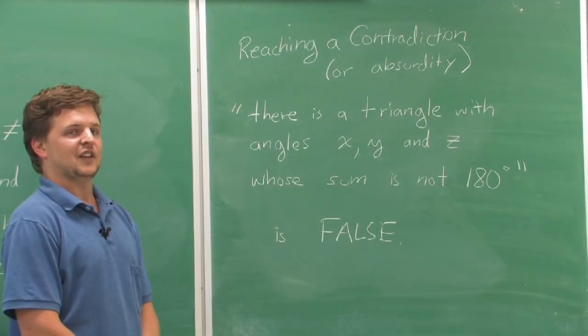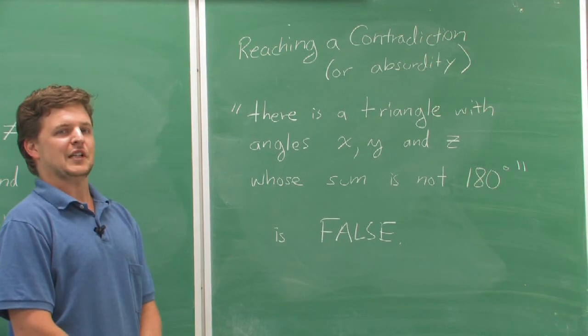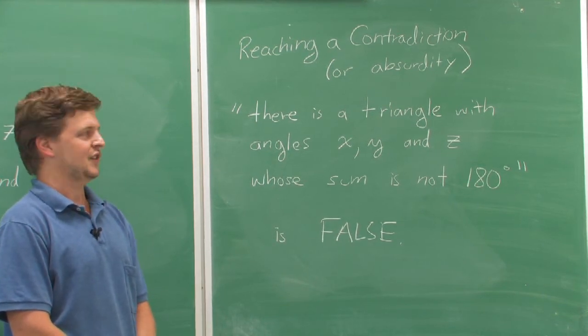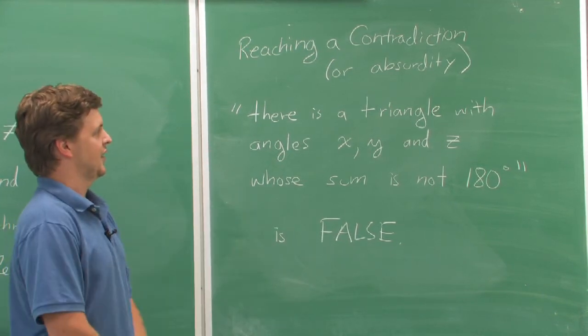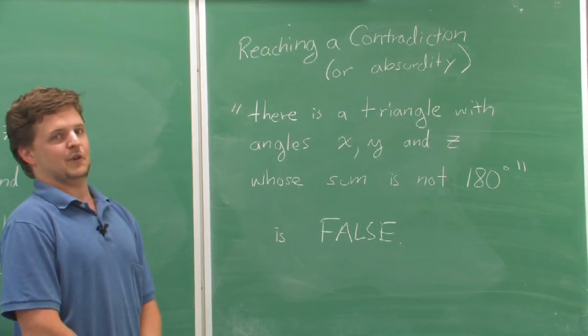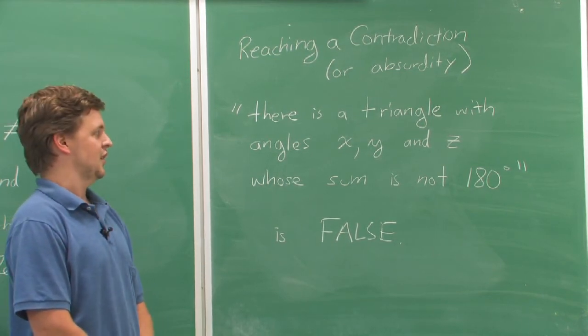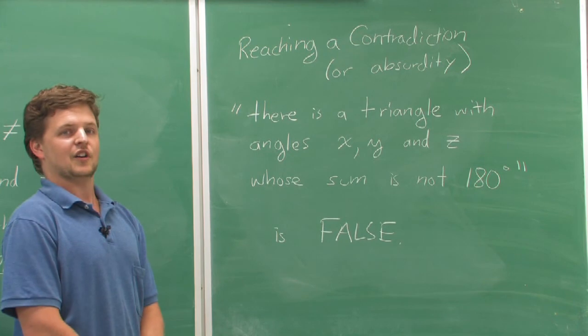In our case, I've taken the original statement and completely negated it, written down the opposite. Here's the opposite. There is a triangle with angles x, y, and z whose sum is not 180 degrees.